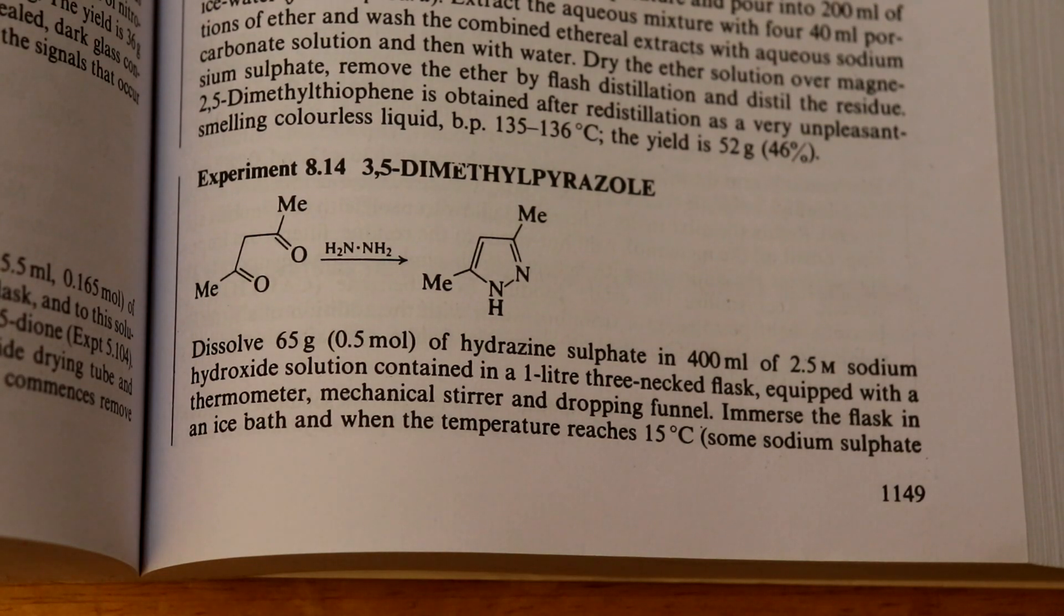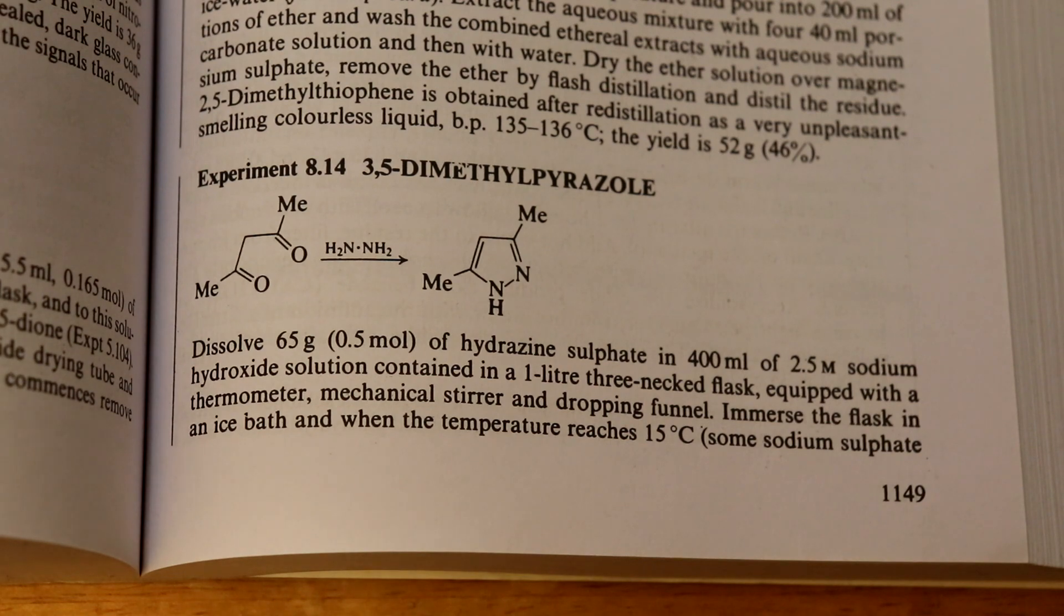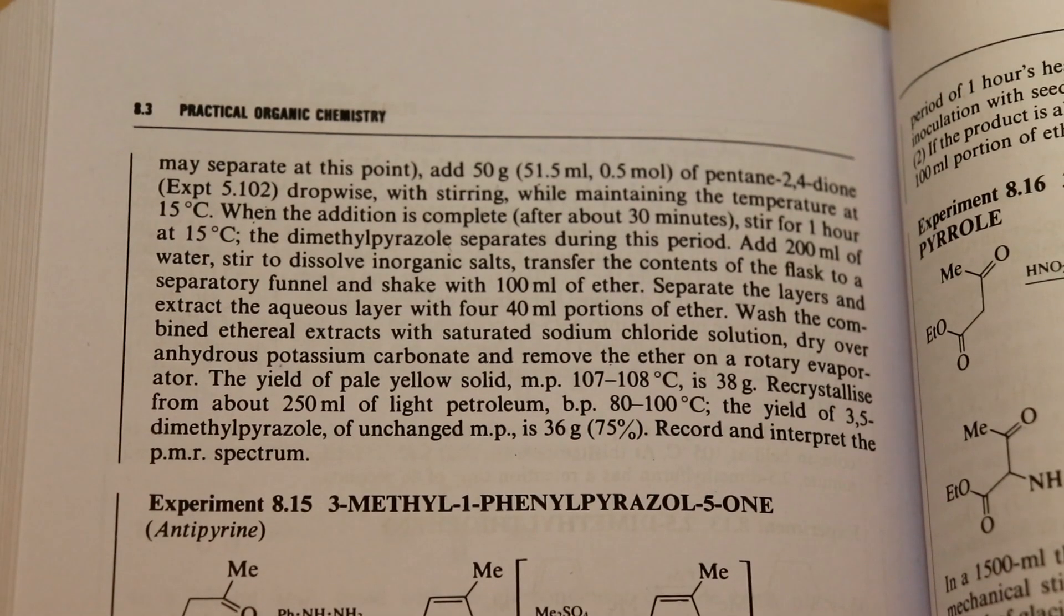In this video, I'm going to be making 3,5-dimethylpyrazole via the condensation of hydrazine with acetylacetone, following the procedure laid out in Vogel's Practical Organic Chemistry at half scale.